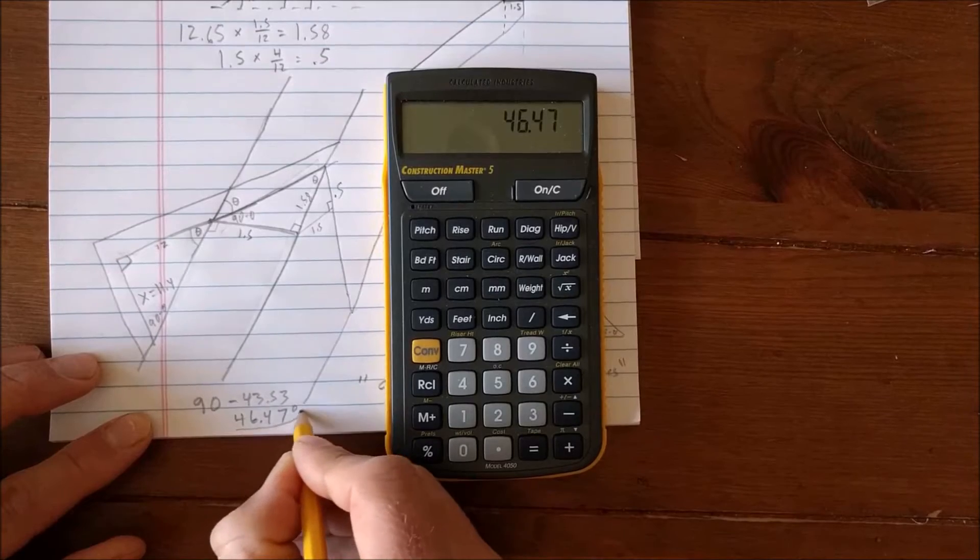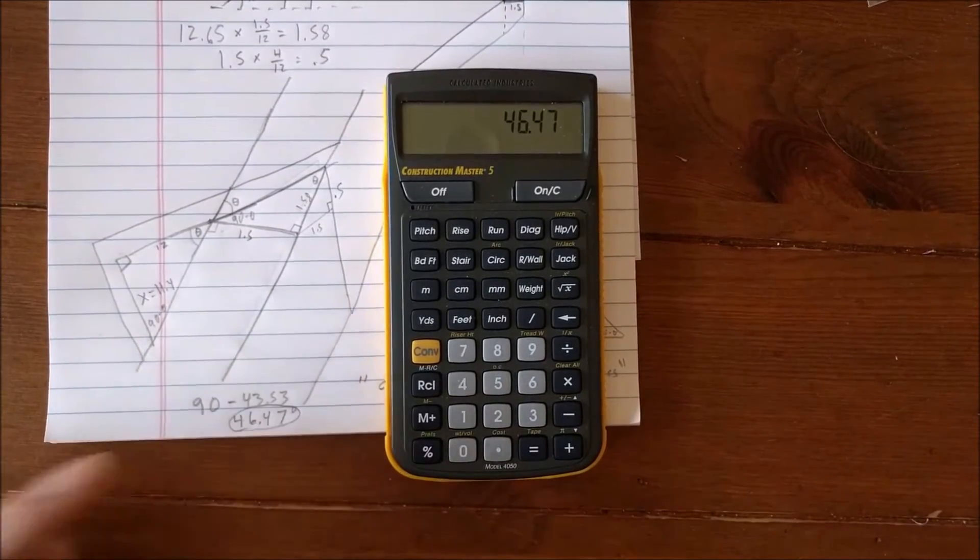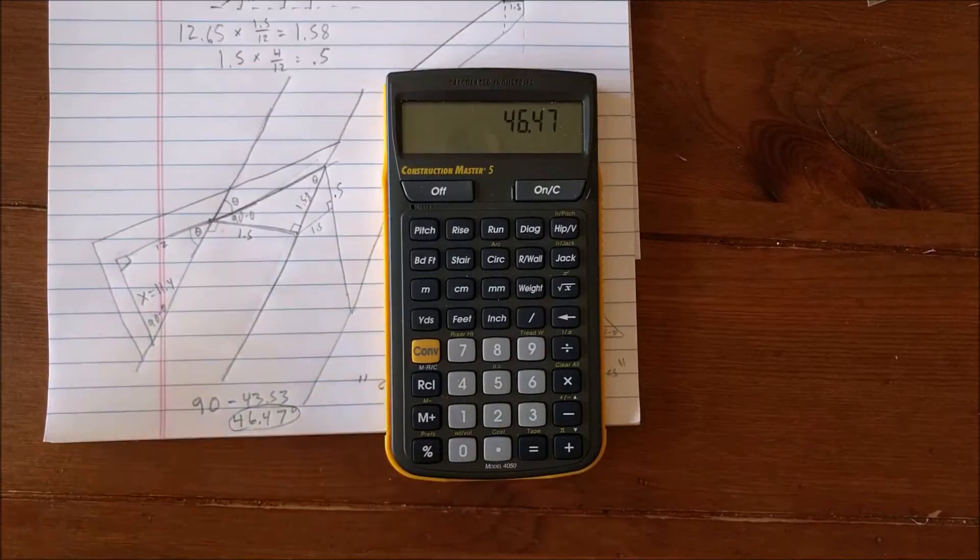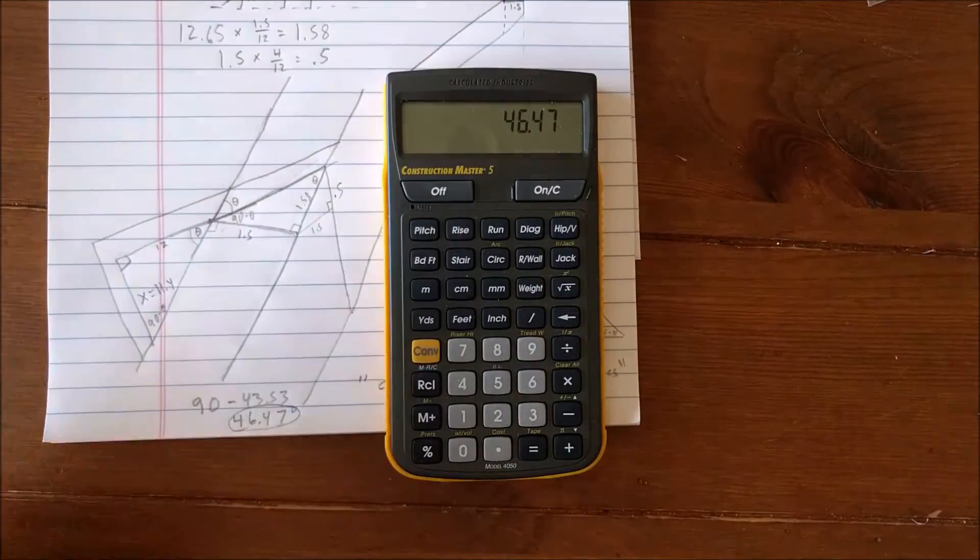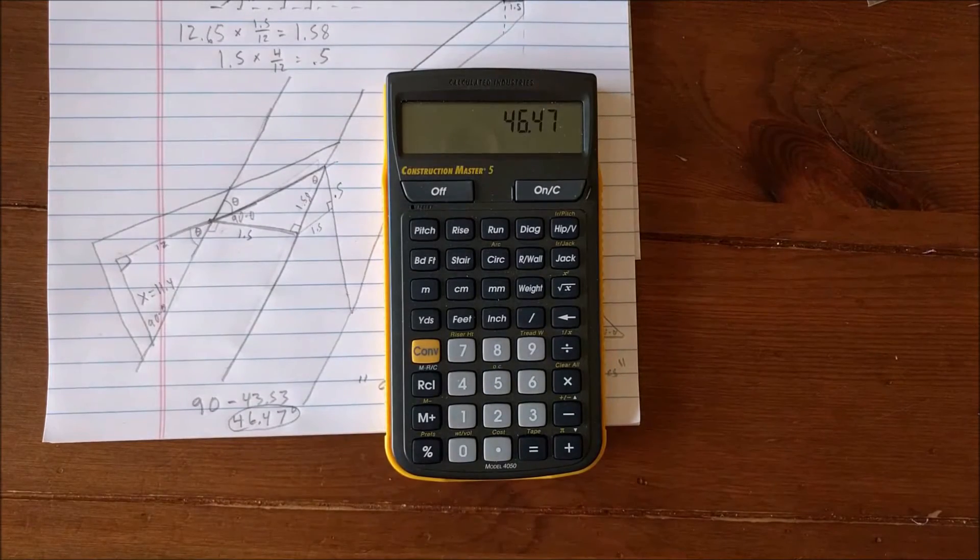We just said that our skill saw is actually 90 minus theta. So 90 minus 43.53 is 46.47 degrees. If you could get that kind of resolution on your skill saw, you'd actually want a 46.5 degree angle to make the hip jack rafter fit as tightly as possible onto the hip rafter.